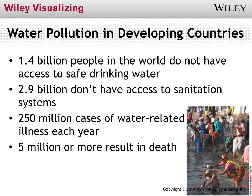We have plenty of water problems in this country even with money and technology, but 1.4 billion people in less-developed countries don't even have safe drinking water. For us, it's a rare inconvenience when we hear a warning to boil our water for a day or two until the system gets cleaned out. But that's not a luxury many people in this world have — they go down to the nearest river, bathe in it, their cattle drink from it, and they drink from it, with no access to simple water treatment. 250 million cases of water-related illnesses are identified every year, resulting in 5 million or more people dying annually — and many remote areas don't even document these numbers.